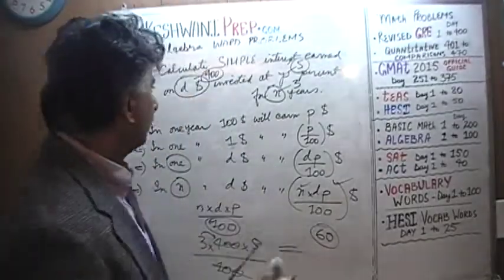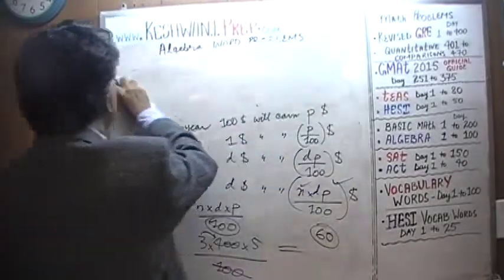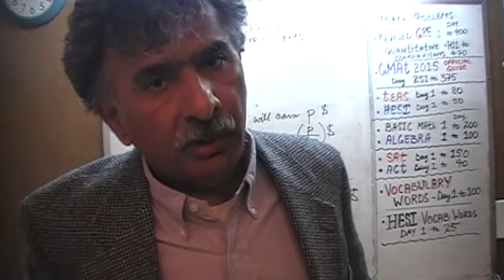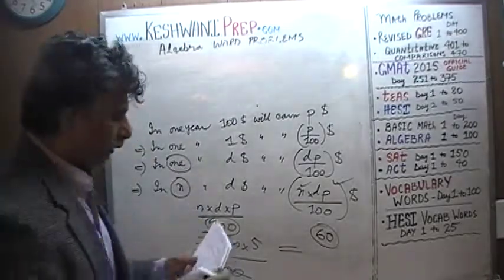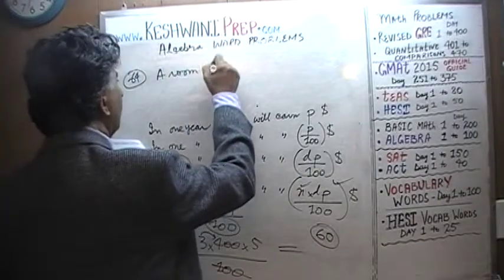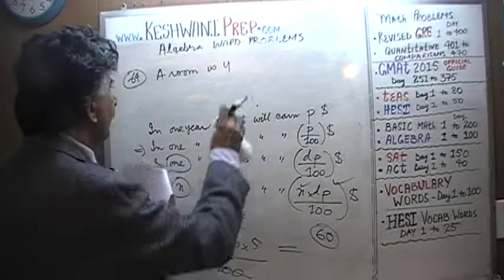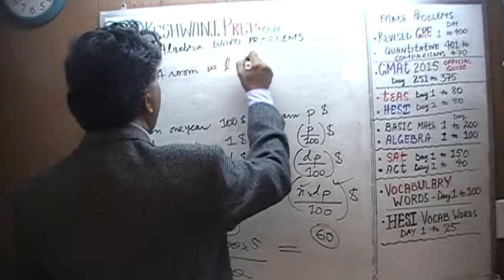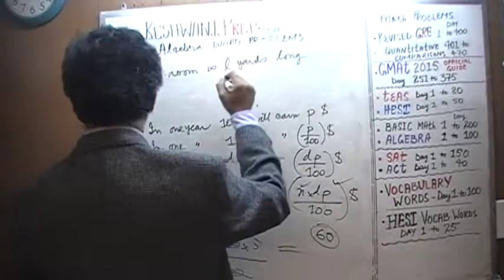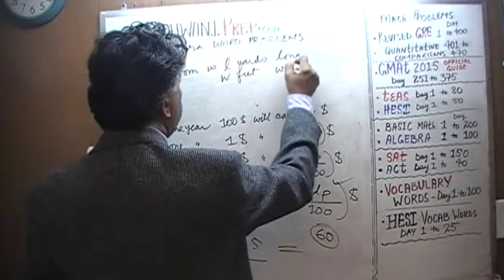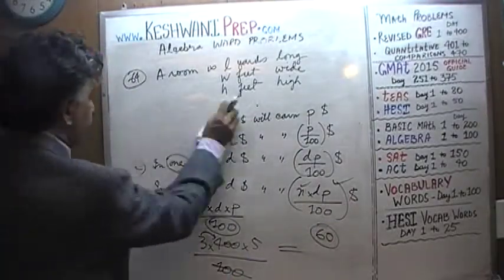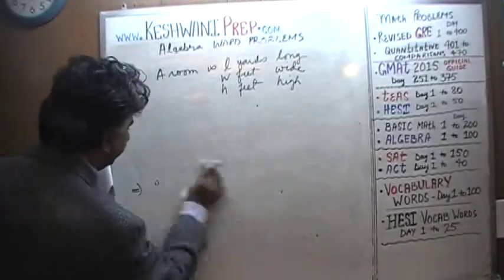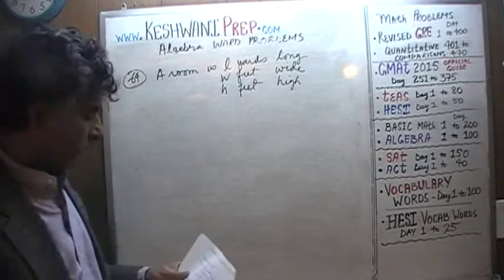Do you understand? Let's do the next one. The next problem we are going to do is very different — nothing to do with money at all. We are going to put carpets in the room and put wallpaper on the four walls. Carpets and wallpapers. Number sixty-four. We are told that our room is L yards long, W feet wide, and H feet high. The height from floor to ceiling is H feet.